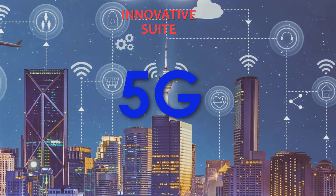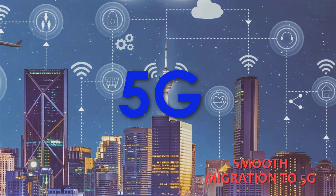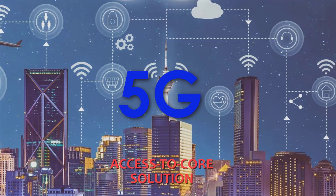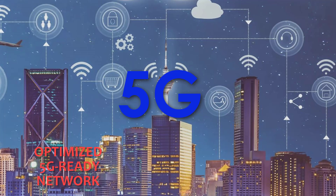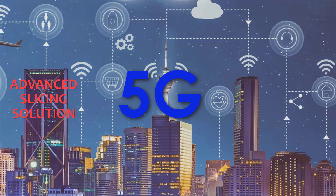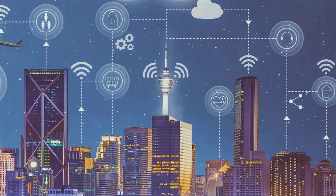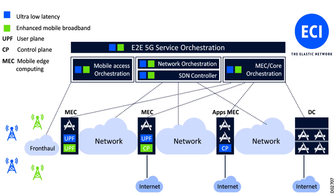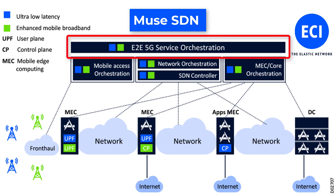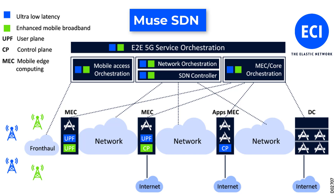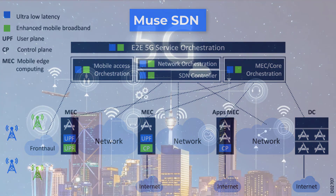ECI offers an innovative suite of best-of-breed solutions tailored to customer needs for smooth migration to 5G networks. This includes a comprehensive 5G solution from access to core, a 5G-ready solution for an optimized 4G network with new capabilities, and an advanced slicing solution addressing diversified network and service requirements while enabling service assurance and addressing security threats. These solutions are open and programmable and are managed by ECI's Muse SDN Domain Orchestration, which is able to interop with any ecosystem orchestration management.